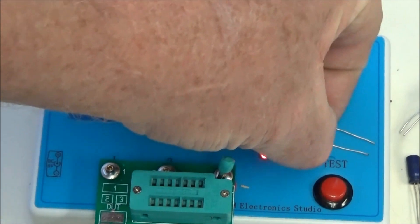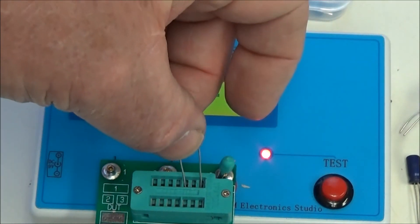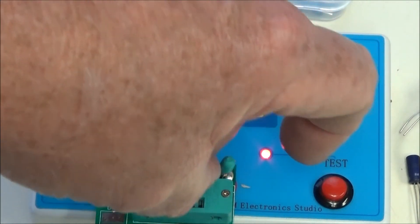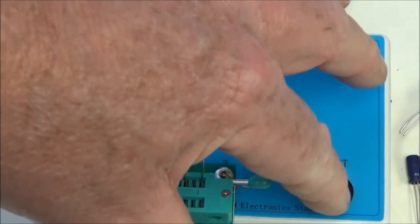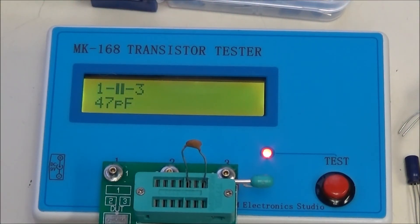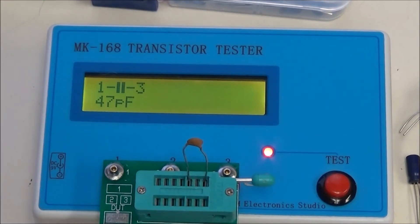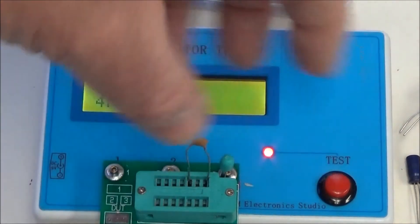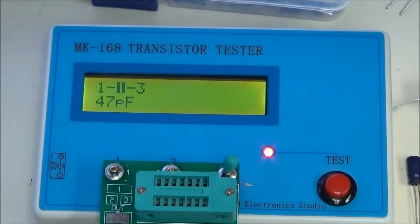Let's try another one. This one's a 47 picofarad. I already know the value on it. Drop in, hit test. Bingo, right on, right on target. 47 picofarads.